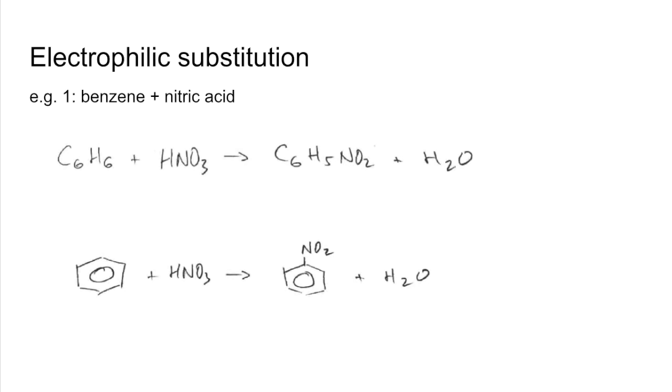Starting with electrophilic substitution. First example is benzene with nitric acid. There are two representations of the equation, and you can see mononitration taking place - one of the hydrogens on the benzene ring is replaced by the nitro group from the nitric acid, giving nitrobenzene.